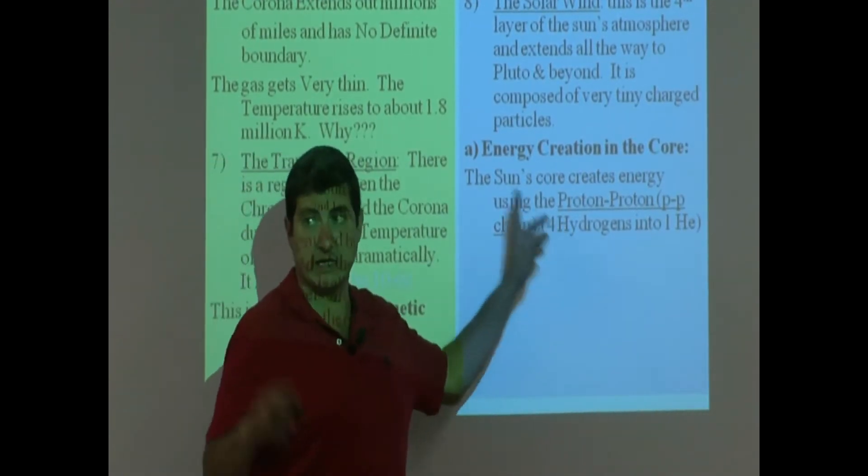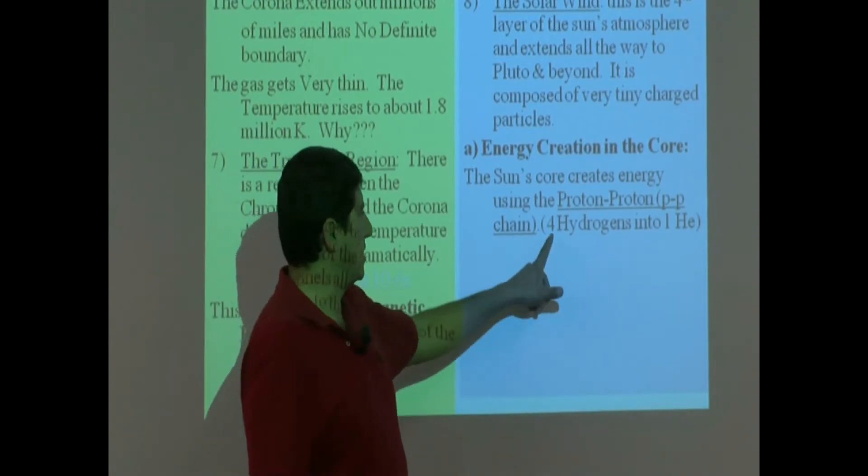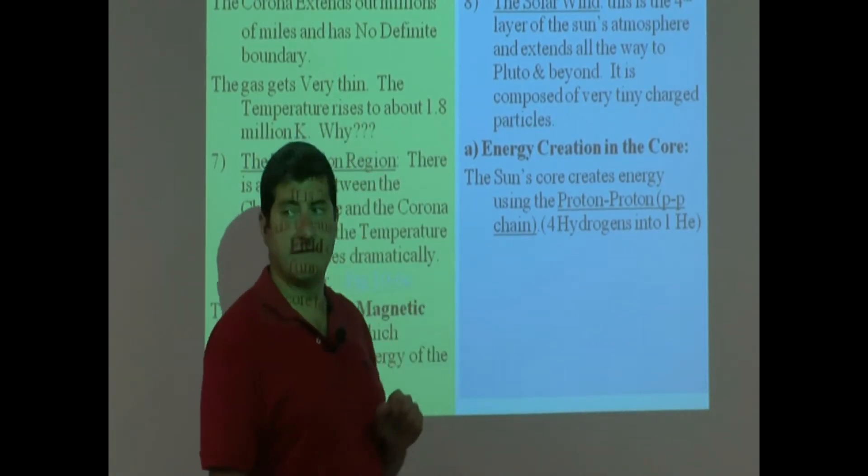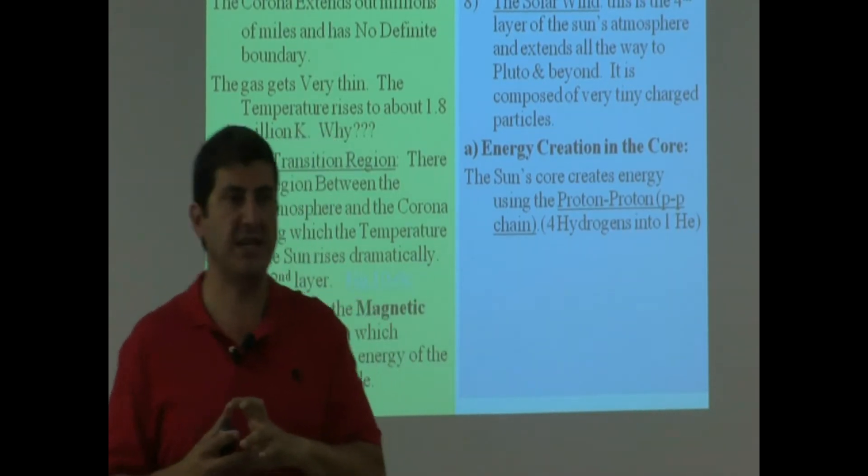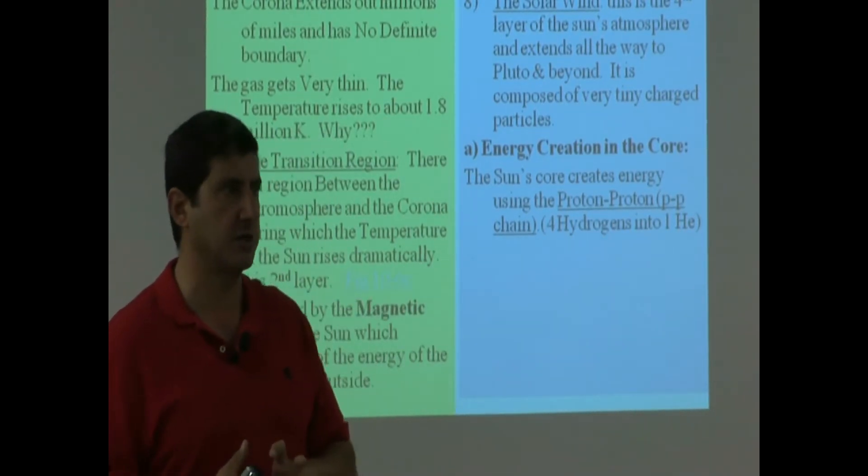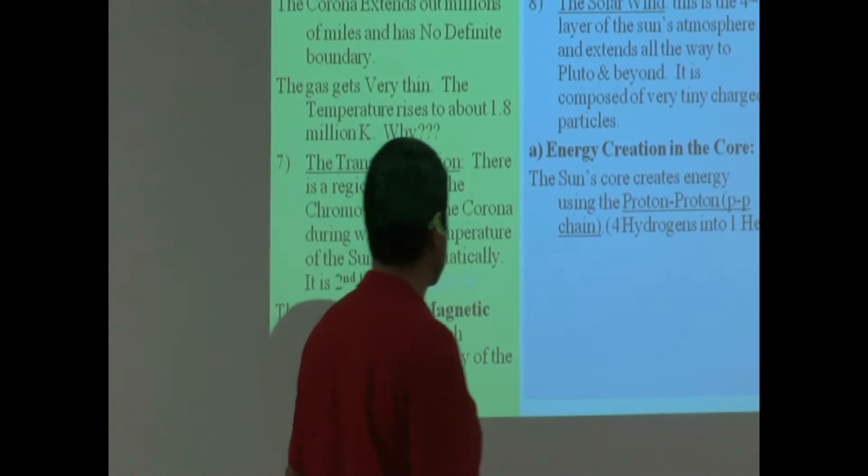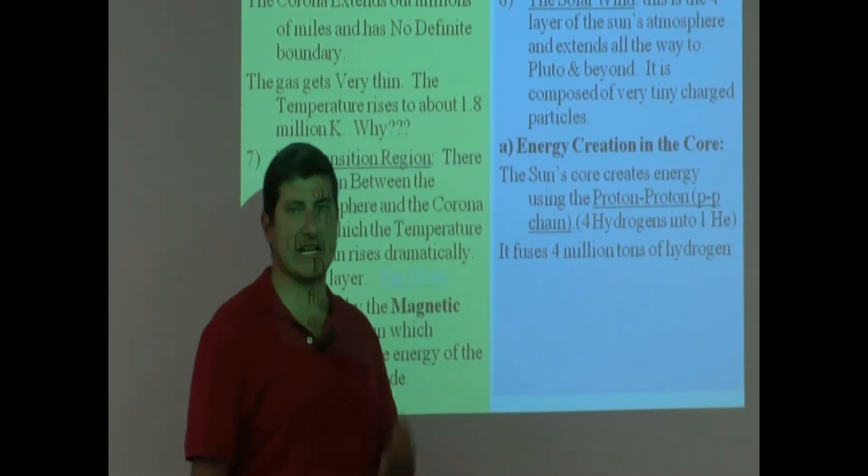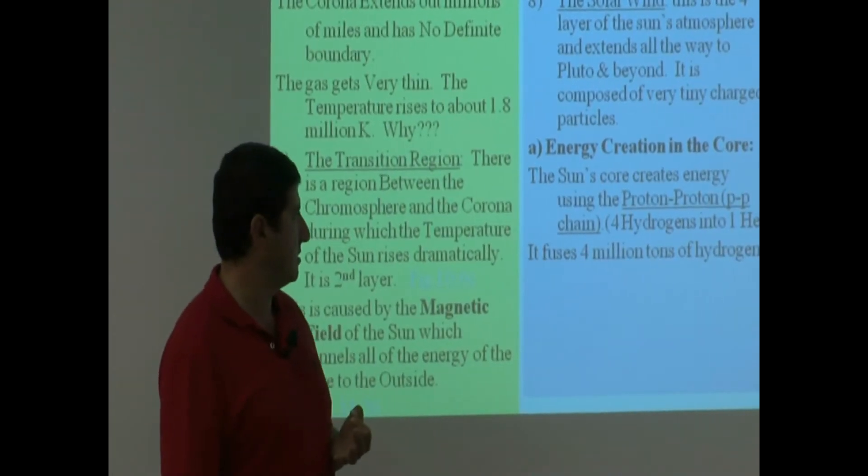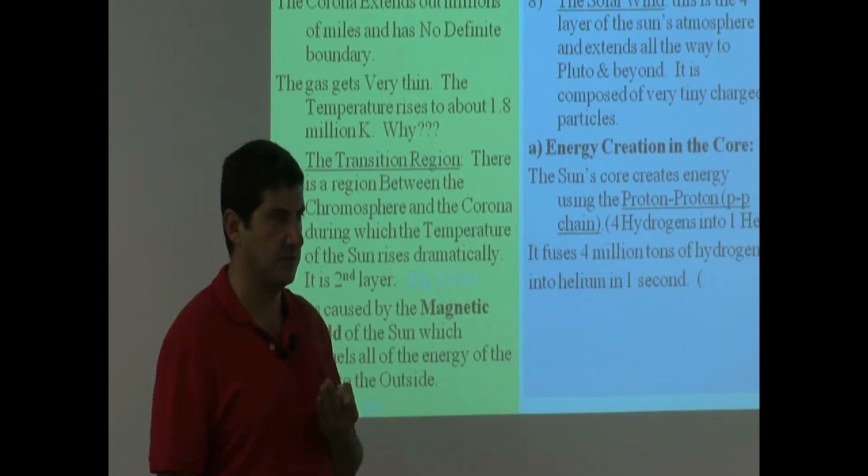So basically what it's doing on the chemical level, it's converting four hydrogens, fusing them together, and creating helium out of that. It's called hydrogen fusion. So it fuses four million tons of hydrogen into helium in one second.